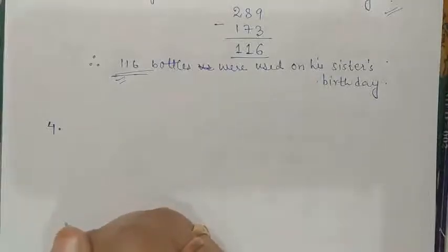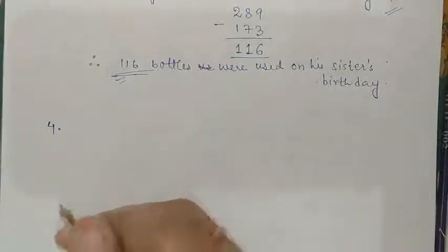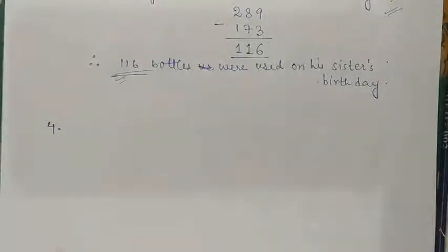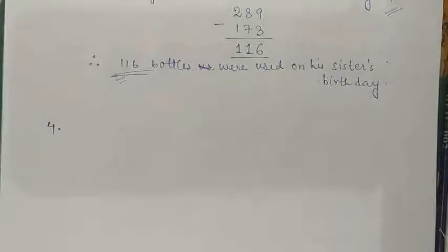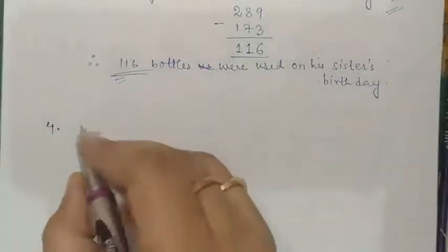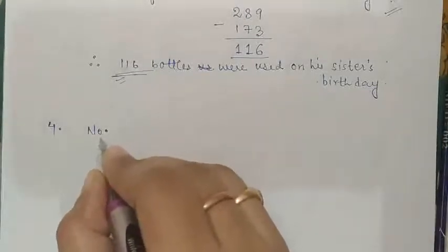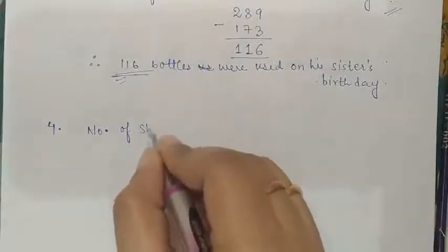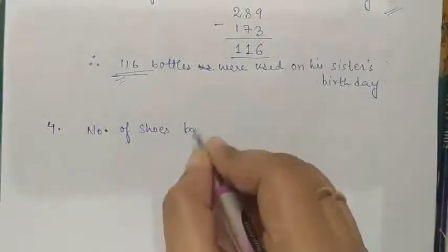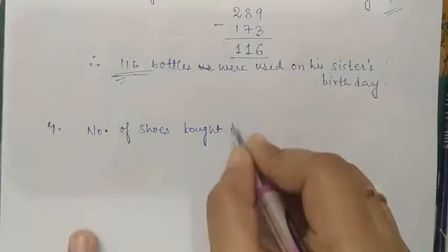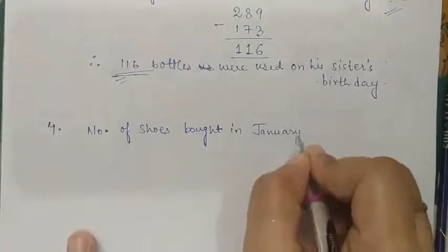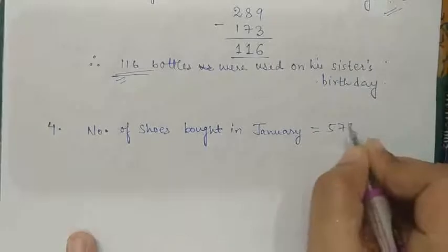So how many pairs did he sell? For finding the number of pairs — the number of shoes sold — we will be subtracting the number of shoes left from the number of shoes he actually bought for his shop. So we will write the statement. We will write N, and a dot is the short form for number. Number of shoes bought in January is equal to 5,788.